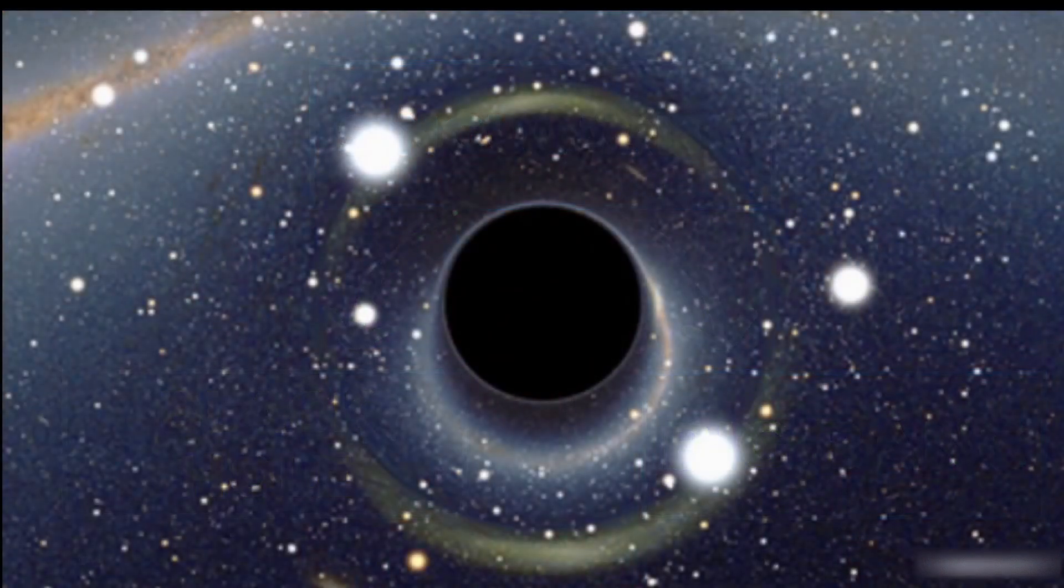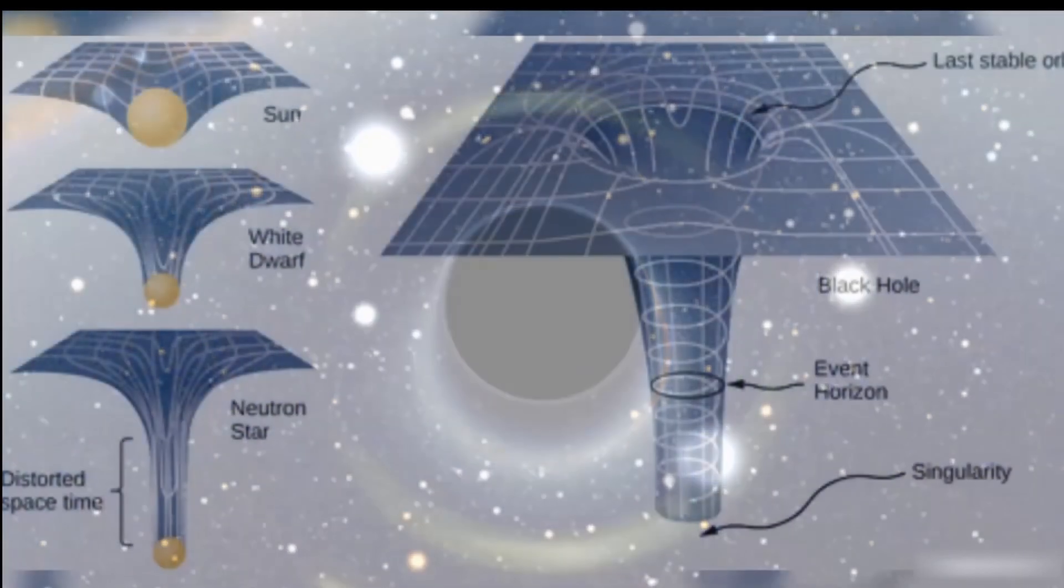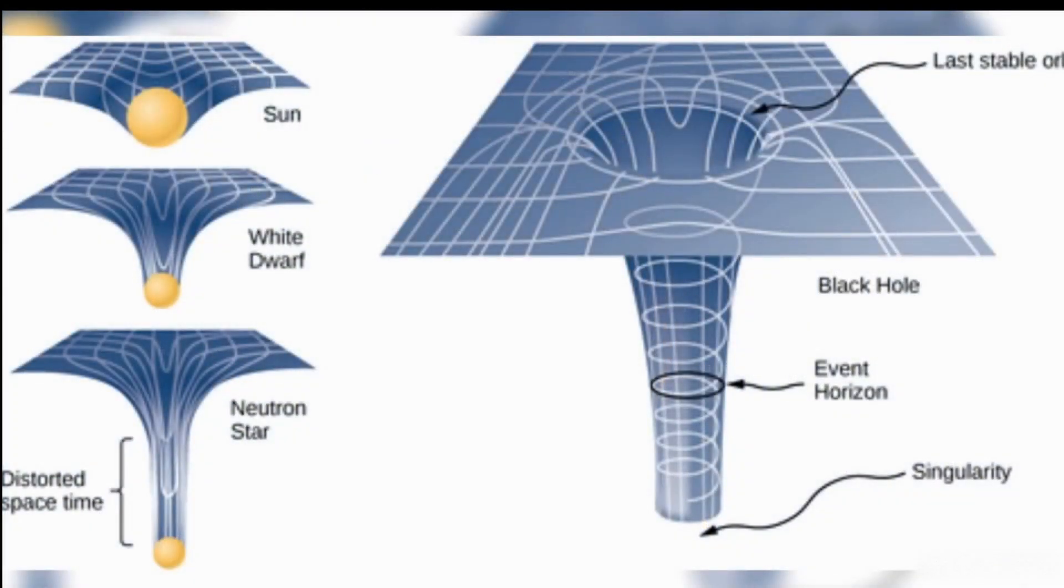Black holes are spots in space where gravity is crazy strong. Nothing, not even light, can escape them. They form when huge stars collapse and become super dense at their core. This super dense point is the singularity. Once something crosses here, it's pulled into the singularity.